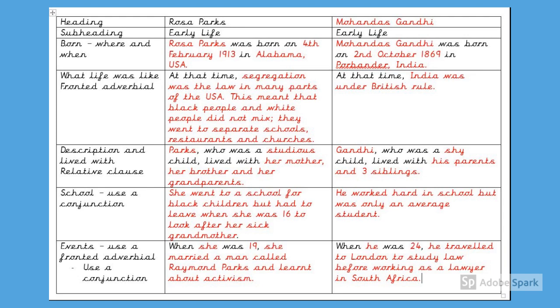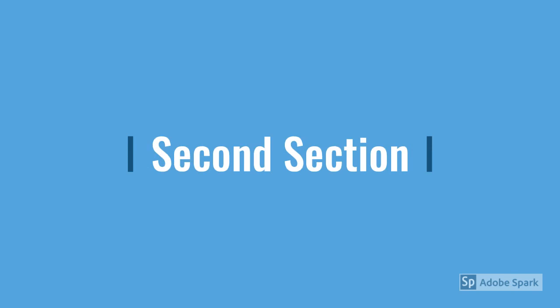Pause this video now and use the boxed up text map and my boxed up example to help you box up your own sentences for your biography on Martin Luther King. Don't forget to include conjunctions, relative clauses and fronted adverbials if the left hand column asks you to do so. Well done — one third of the way through your plan! You should now have a boxed up plan for what you'll be writing in the first section of your biography for Martin Luther King. Now we're going to have a look at the second section.